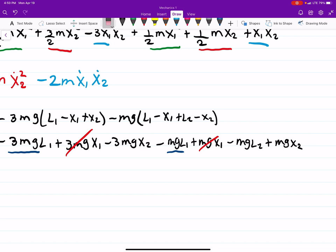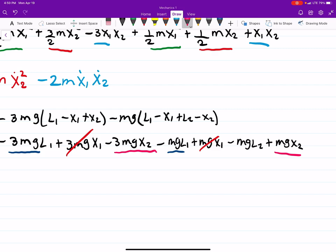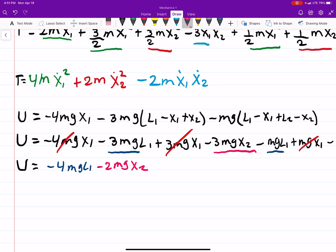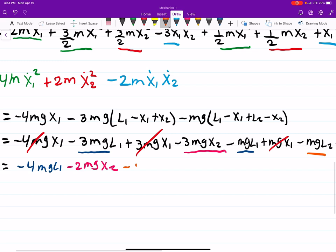we're going to have here's one with x2 here's one with x2 so that is minus 2 mg x2 and then and then we have this guy just kind of hanging out. We'll include that. Perfect.